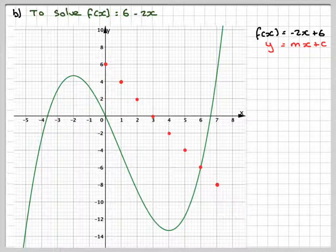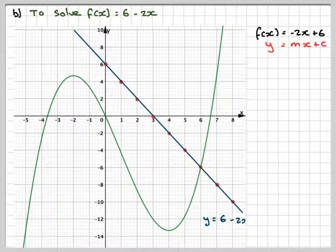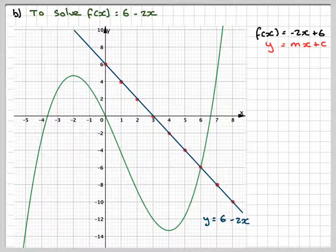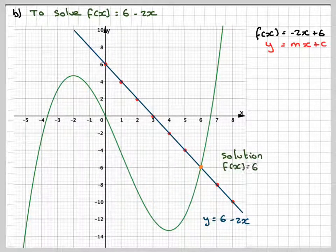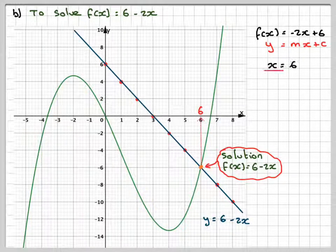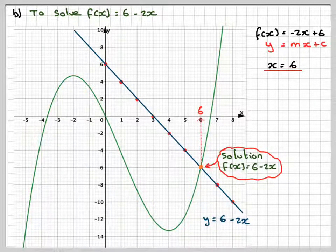Take your ruler and place it against those points, and then draw a line and label it 6 minus 2x. Right, we all want to know the solution, so that's going to be that point there. Okay, so the solution of f of x is equal to 6 minus 2x, and if we read it off the graph it's going to give me x is equal to 6.